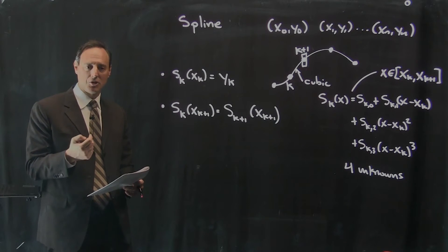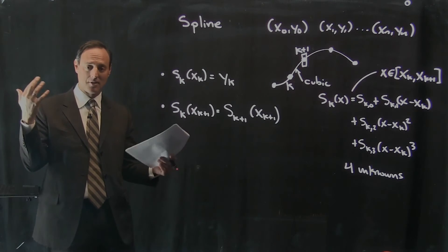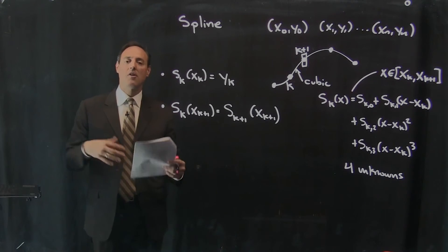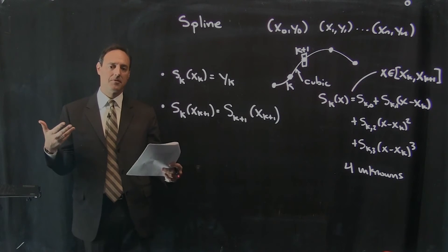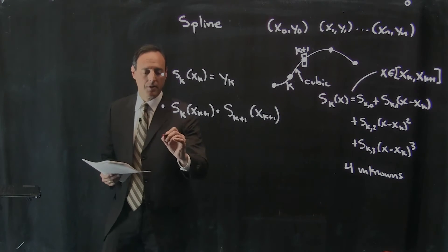the second derivatives as well, the inflection points. So this is going to make it in some sense, the colloquial way of saying, is it going to be extra smooth? It's going to be not only the first derivatives match, but the second derivatives match. So this is going to be a very strong constraint on this.